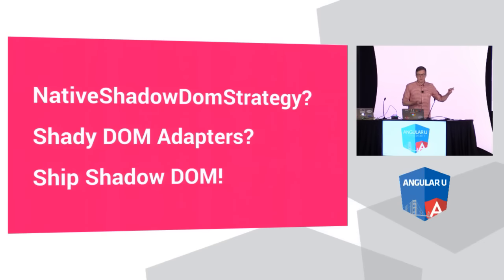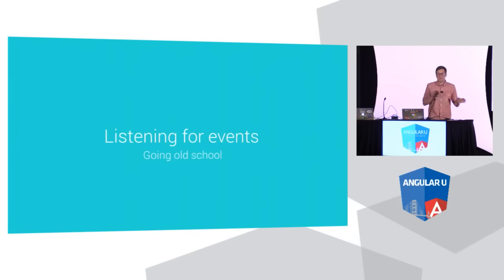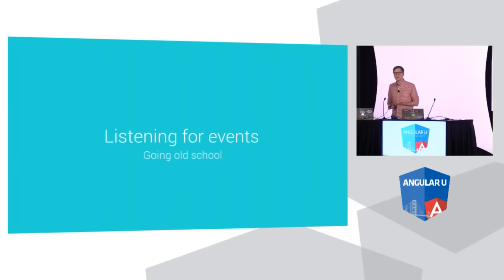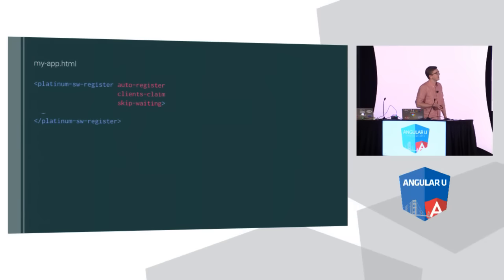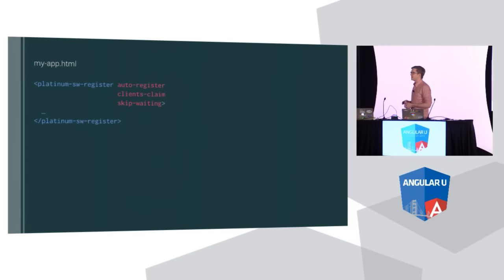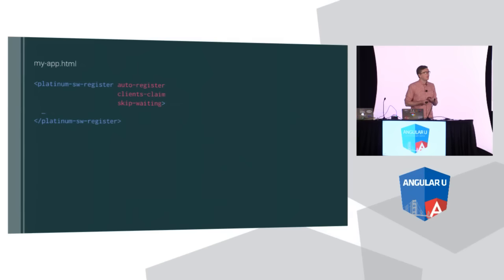That was a stumbling block, but there's more cool stuff we can actually do. The next thing I wanted to do was listen for events coming out of elements. Not all elements do content distribution — we have some interesting elements that do things like offline caching. I wanted to use the Platinum Service Worker element just to cache my application. It does not display any UI and does not need to distribute anything — so in theory I should be able to continue using this in my Angular 2 app. The one thing it does is dispatch events — there's an event that tells us when the Service Worker has begun caching or finished caching.